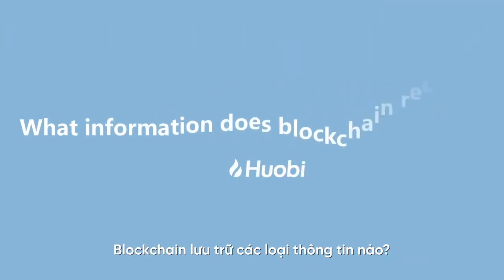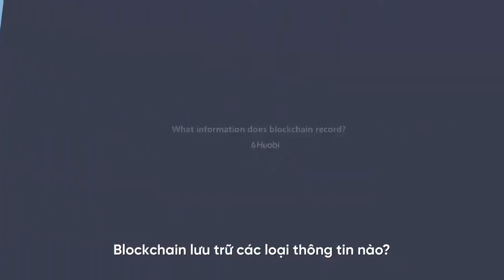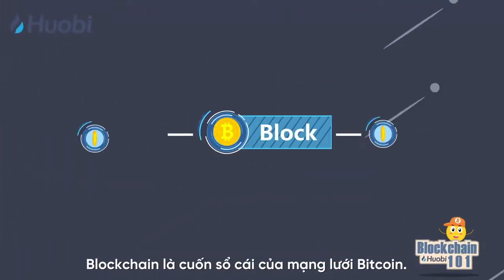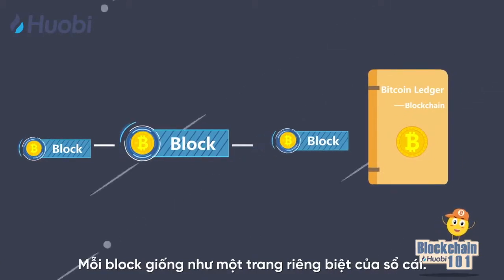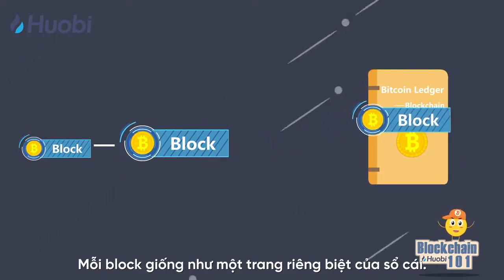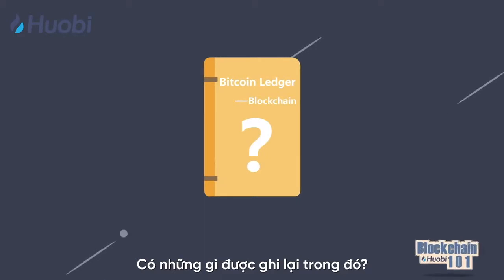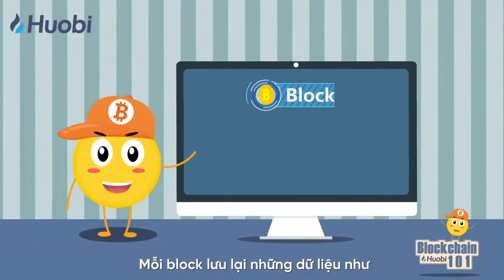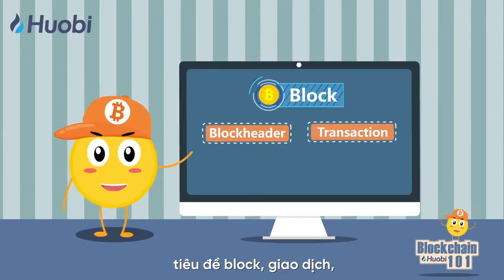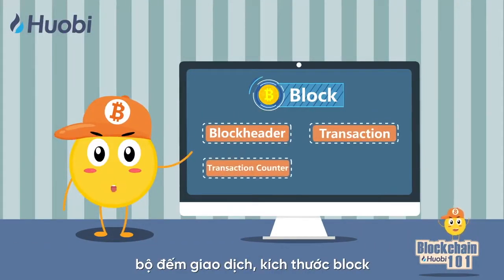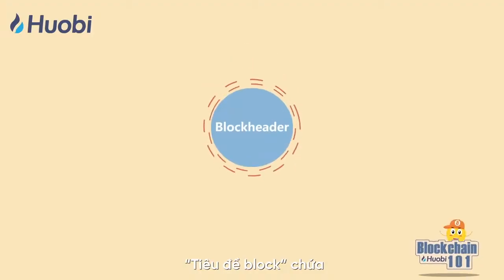What information does blockchain record? Blockchain is the ledger of the Bitcoin network. Each block is like a ledger's individual page. Each block records data such as block header, transactions, transaction counter, and block size.